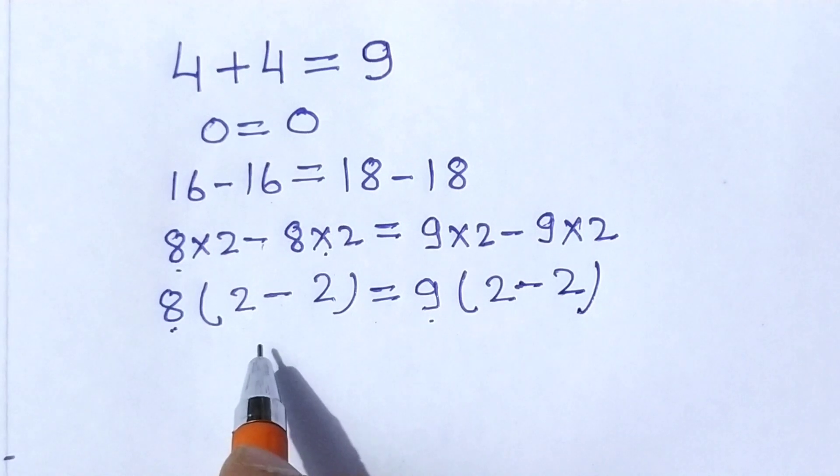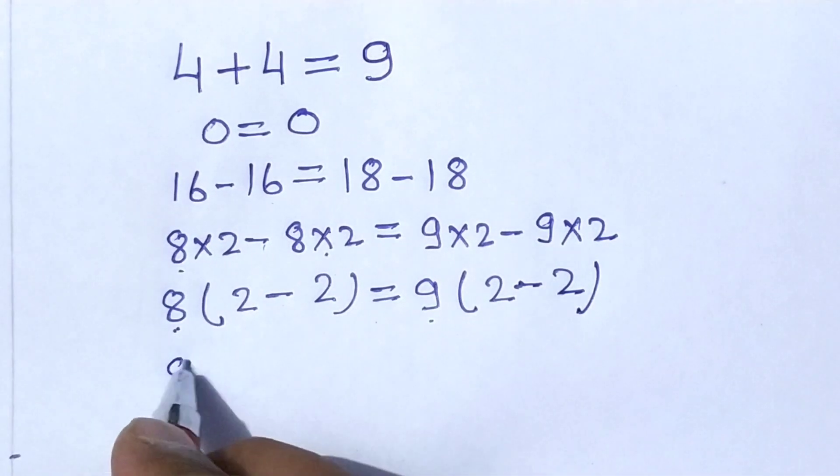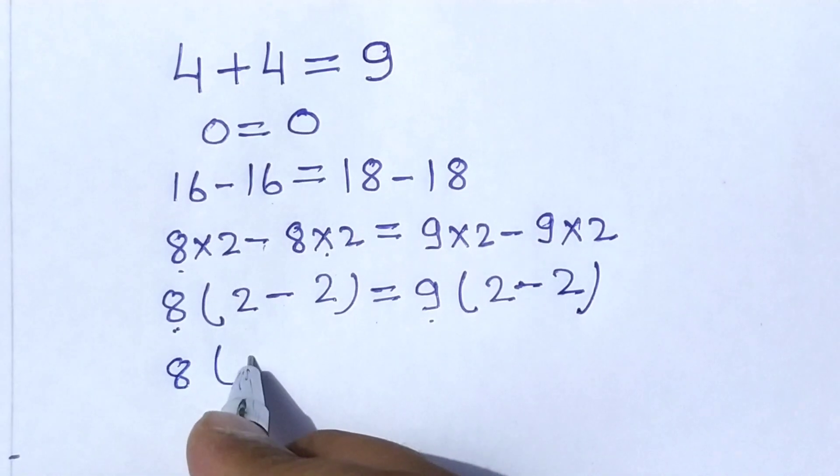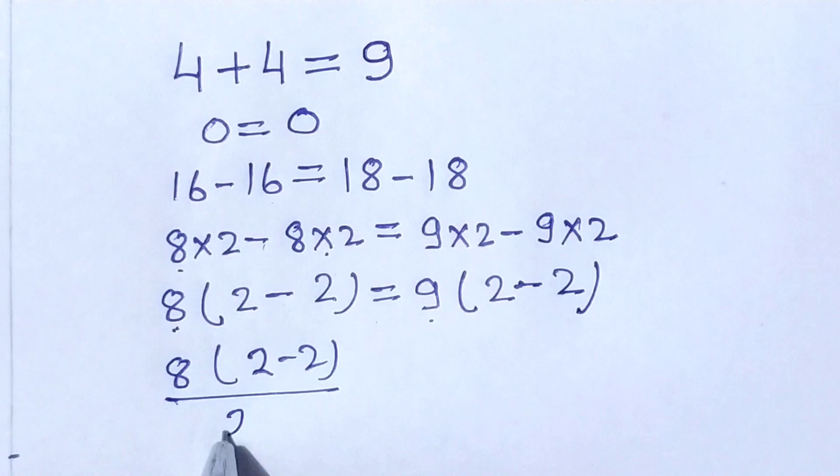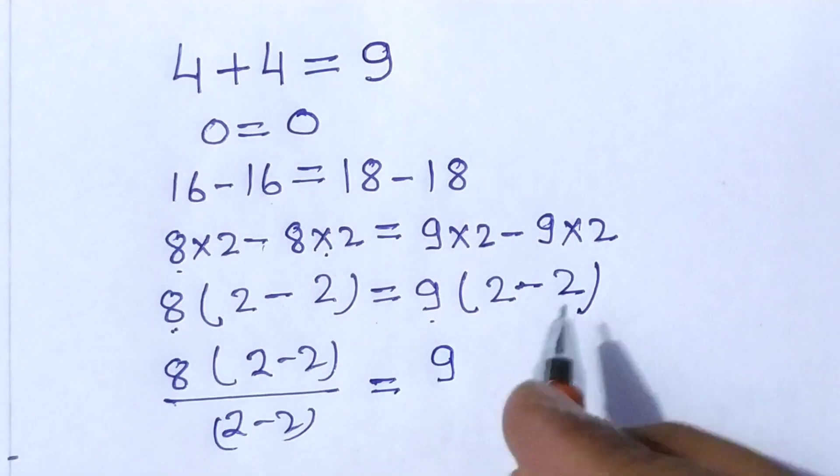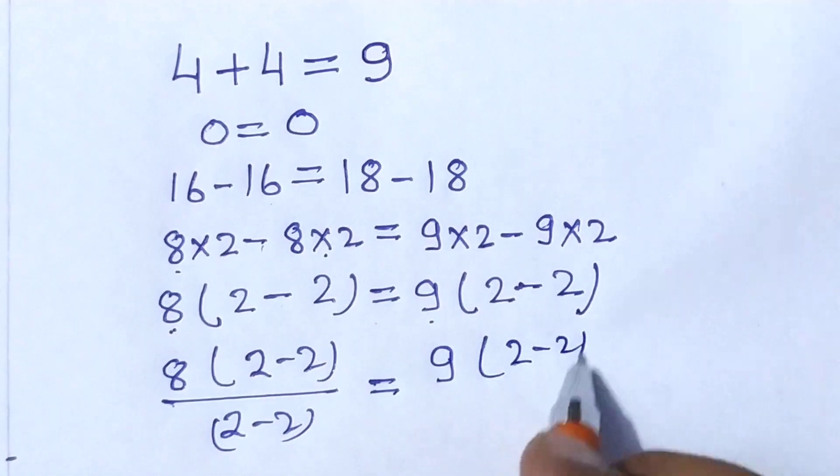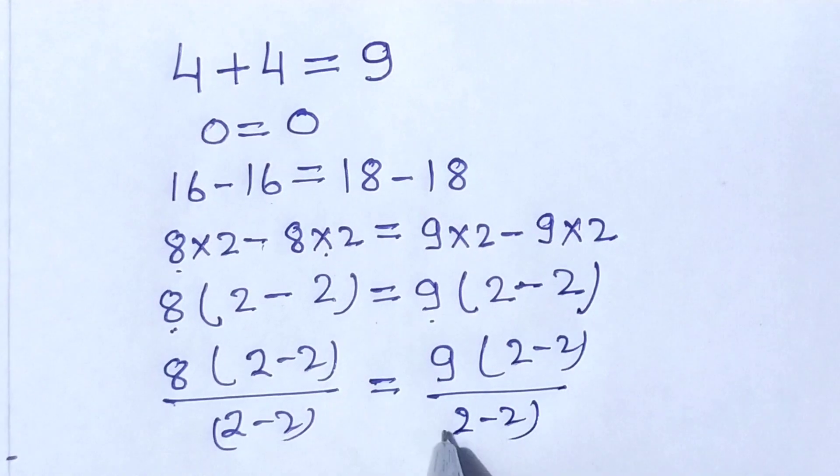Now, divide by 2 minus 2 both sides, it will be 8 into 2 minus 2 divided by 2 minus 2 is equal to 9 into 2 minus 2 divided by 2 minus 2.